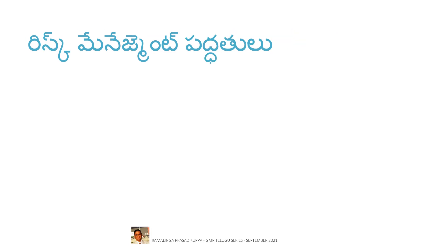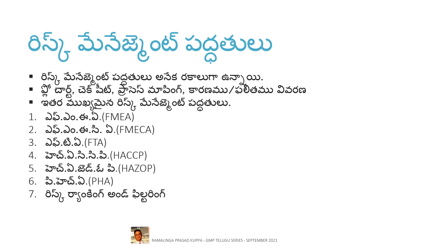This slide gives information on several QRM tools for risk management. The risk management tools include flowcharts, check sheets, process mapping, cause and effect charts, FMEA, FMECA, FTA, HACCP, HAZOP, PHA, and risk ranking and filtering.